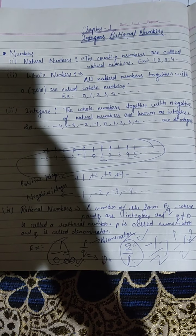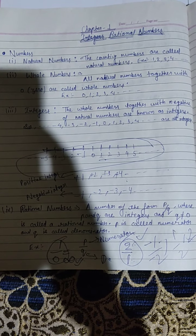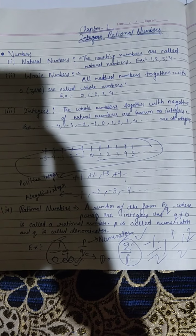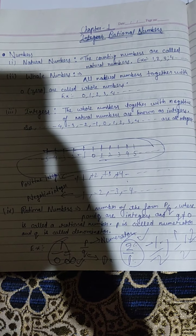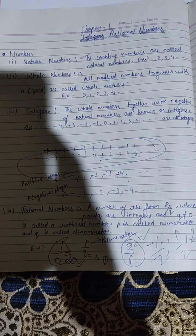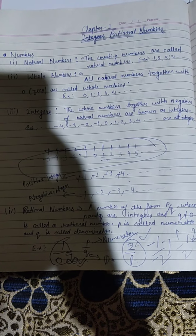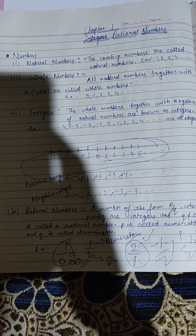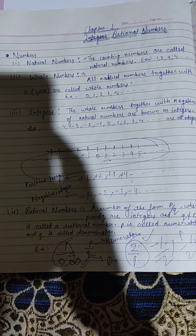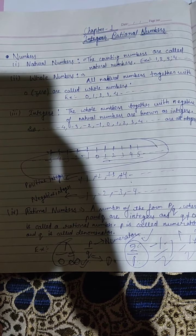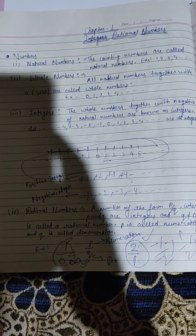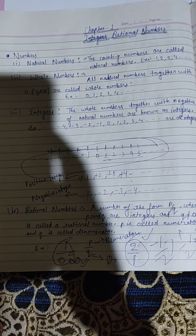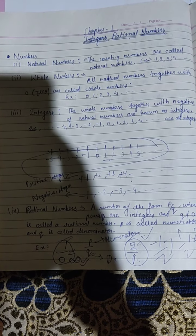As you all know about the numbers — the first one is Natural Numbers. The counting numbers are called Natural Numbers. For example: 1, 2, 3, 4, 5, 6, and so on. These are all the Natural Numbers.